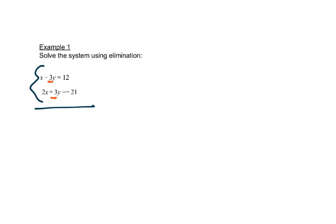So we're going to add these equations together. So we have 1x plus 2x gives me 3x. Negative 3y plus 3y gives me 0. That cancels out. That's what I want. 12 plus a negative 21 is negative 9.